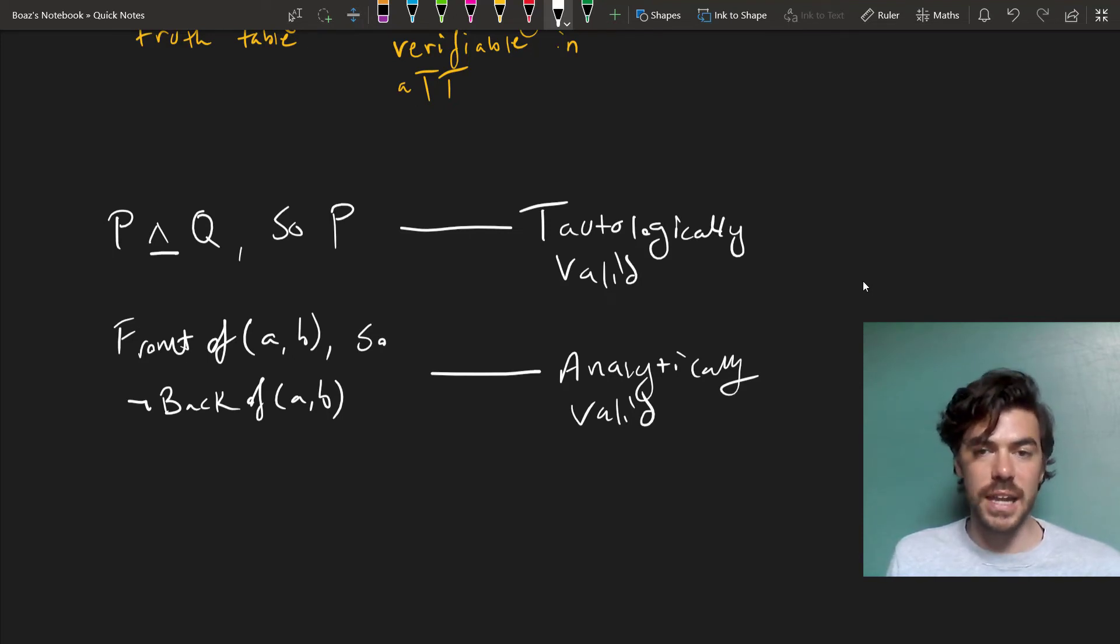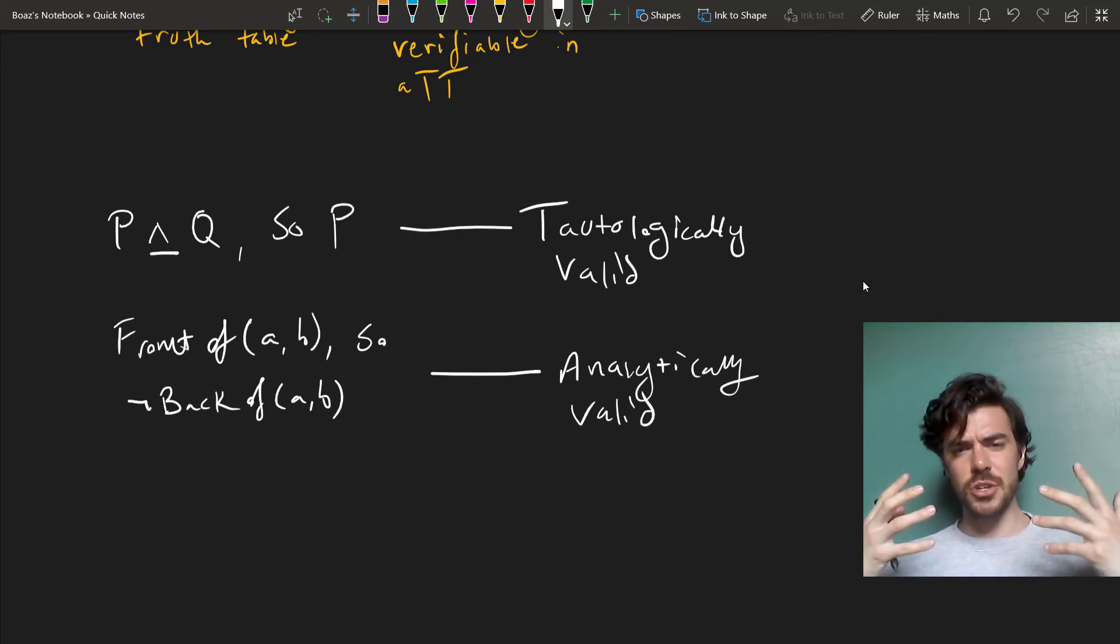So when we use TAUTCON and ANACON in Fitch, what we're doing is we're appealing to these notions of tautological validity and analytical validity. Now these aren't rules per se, but they're approaches to giving proofs within the Fitch system that help us to think in terms of this distinction.